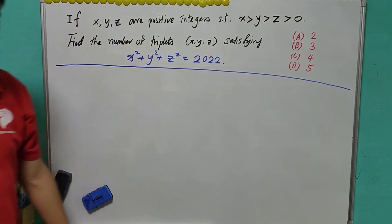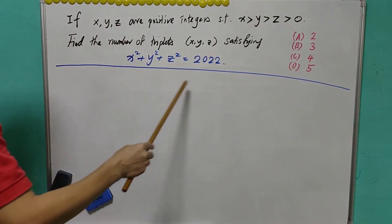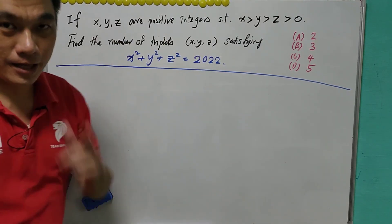Welcome to another math problem of the week. Sum of 3 square equals to 2022. Let's talk about it.